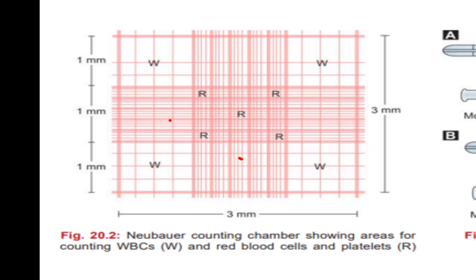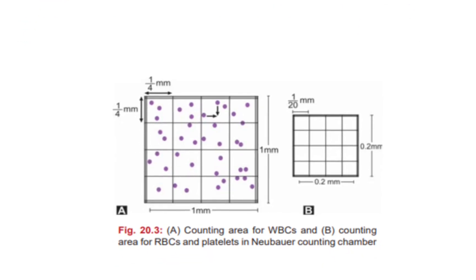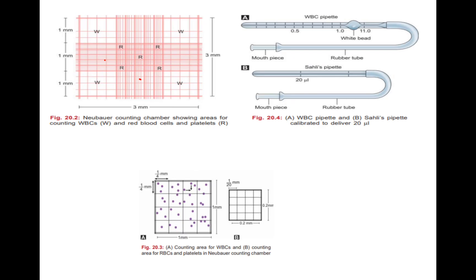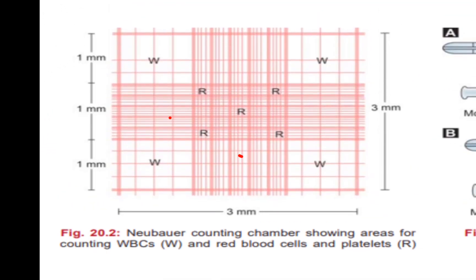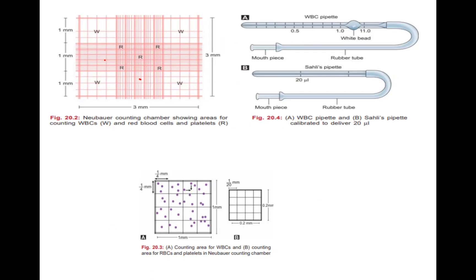The center square for RBC and platelet counting contains 25 squares. Each of these 25 squares in turn has 16 small squares. So to recap: on the corners we have four large squares for WBCs, each with 16 small squares; in the center we have one large square for RBC and platelet counting, which has 25 squares, and each of those 25 squares has 16 small squares.